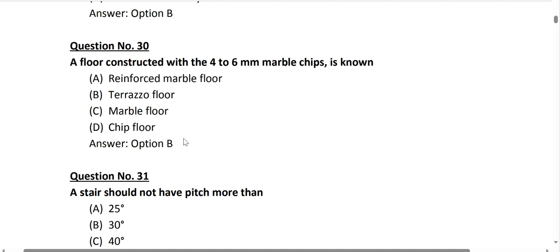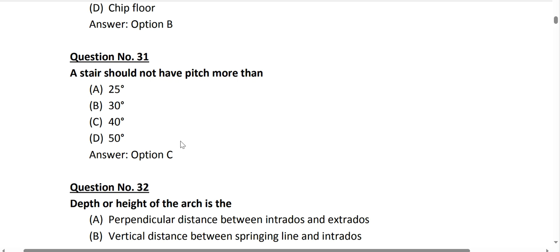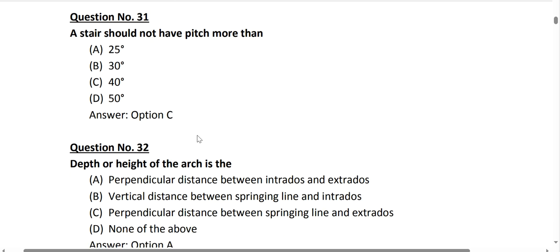Question number 30: the floor constructed with 4 to 6 mm marble chips is a terrazzo floor. Question number 31: the pitch angle of a roof should not be more than 40 degrees and not less than 25 degrees. Generally, the pitch range is 25 up to 40 degrees. Option C is correct.